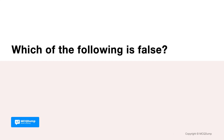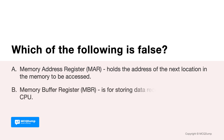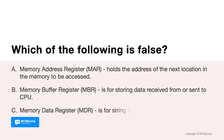Which of the following is false? Options are: A. Memory Address Register (MAR) holds the address of the next location in the memory to be accessed. B. Memory Buffer Register (MBR) is for storing data received from or sent to CPU. And C. Memory Data Register (MDR) is for storing operands and data.